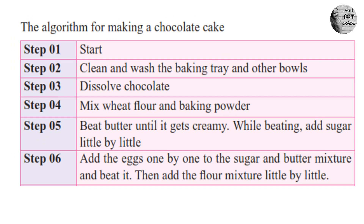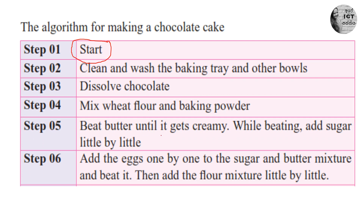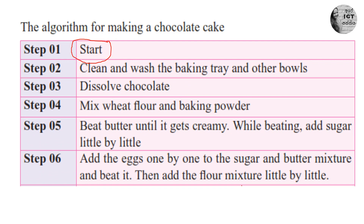Here is an algorithm to make a chocolate cake — this one is in your textbook. There is a Start tag and also an End tag. These are the steps to follow when making a chocolate cake. It may vary from person to person, but what you have to understand is there should be a Start and End tag and steps should be written in order.